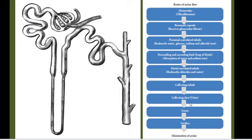This is the route of urine flow. Starting from the glomerulus where ultra-filtration is done, urine enters the Bowman's capsule as glomerular filtrate. In the proximal convoluted tubule, water, glucose, sodium, and chloride ions are reabsorbed. In the loop of Henle, absorption of water and sodium ions takes place. In the distal convoluted tubule, chloride and water are reabsorbed. Finally, urine enters the collecting tubule and collecting duct.